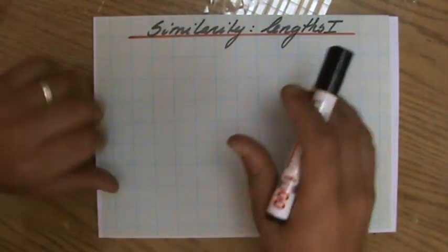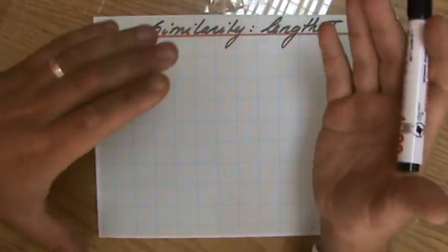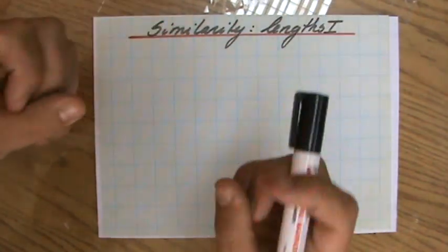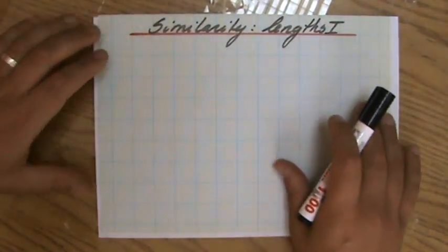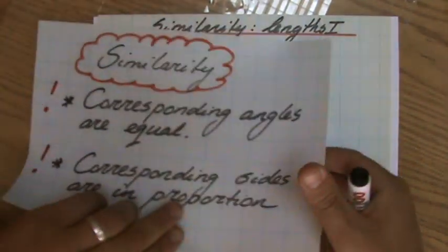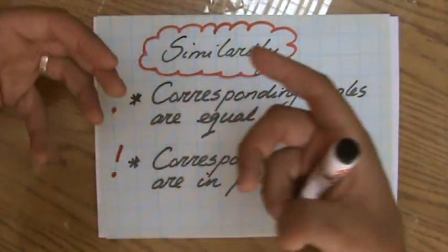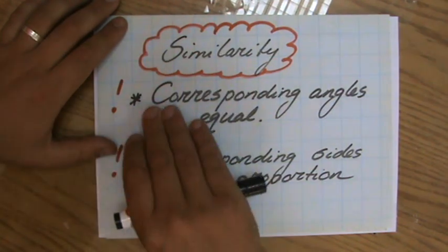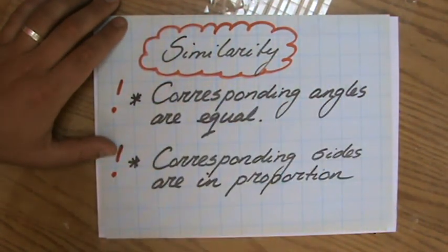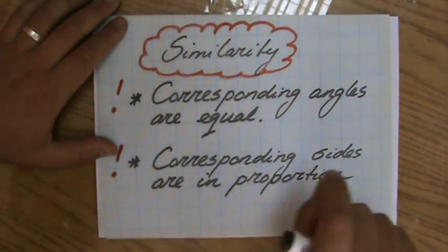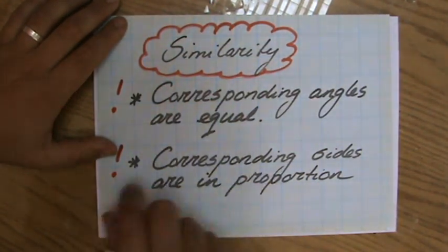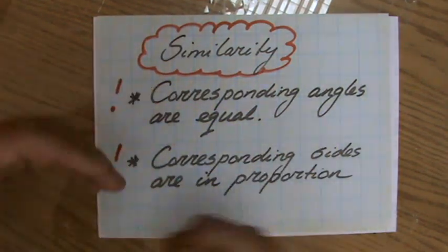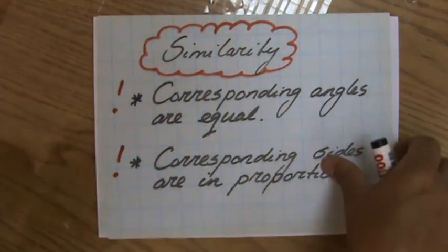I have explained the difference between congruence and similarity. Congruence means identical, exactly the same, while similarity means something different. Similar figures - and this is crucial to understand - means that the corresponding angles are equal and the corresponding sides are in proportion. The corresponding angles are equal, and the corresponding sides are in proportion.